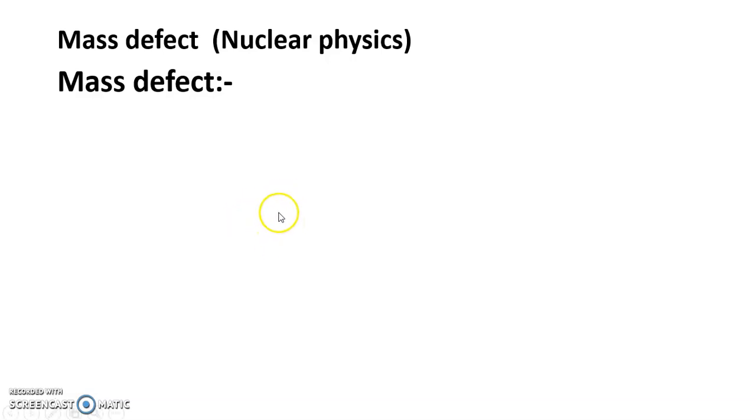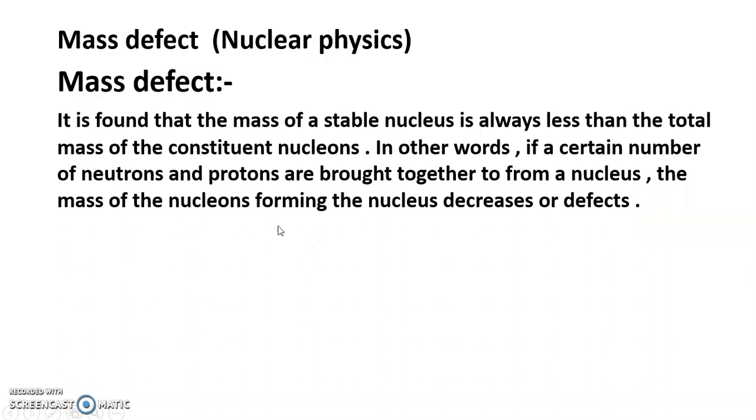So mass defect. It is found that the mass of a stable nucleus is always less than the total mass of the constituent nucleons. In other words,